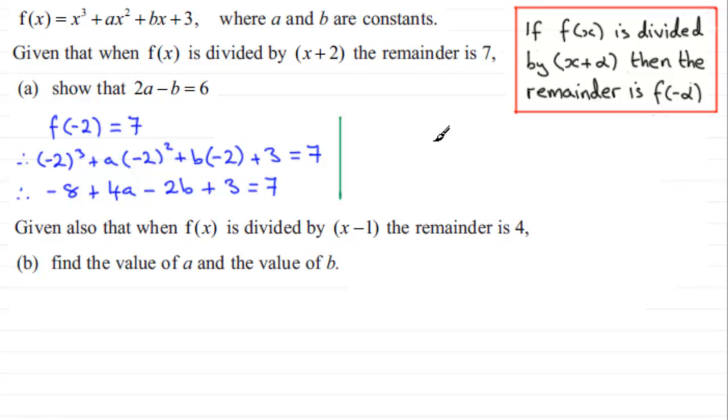So all we need to do now is just group up our terms. If we group them up, we've got minus 8 plus 3 which is minus 5. Add that to both sides, add 5 to both sides, and you're left with 4a minus 2b equals 7 plus 5 which is 12.